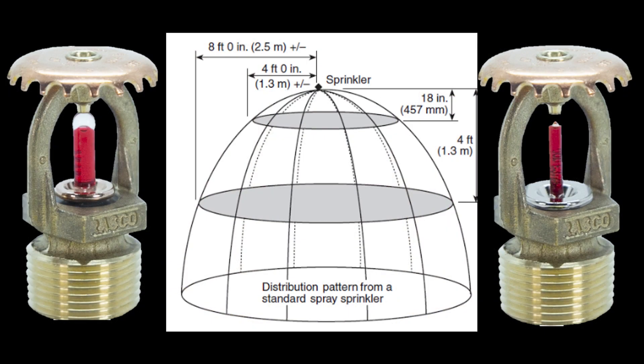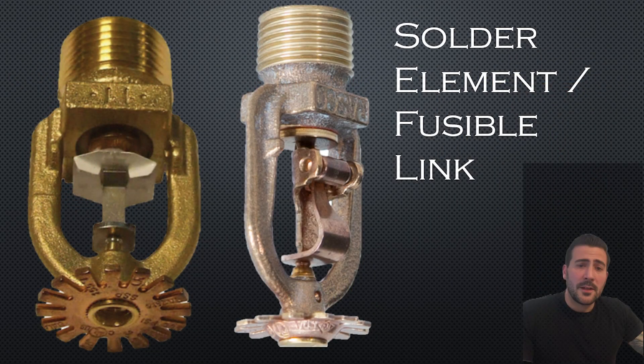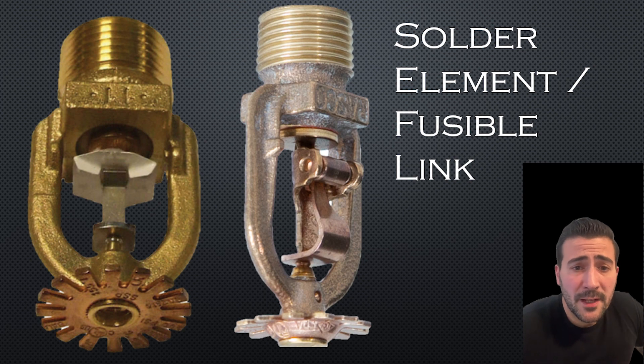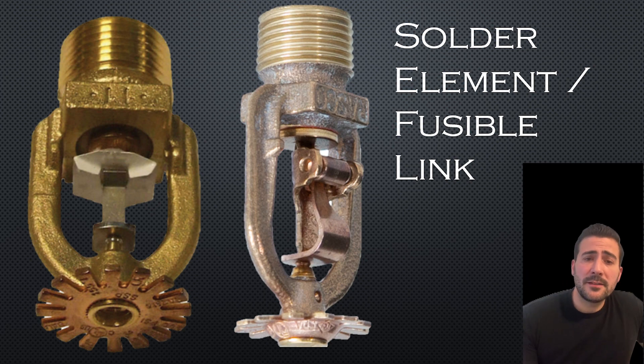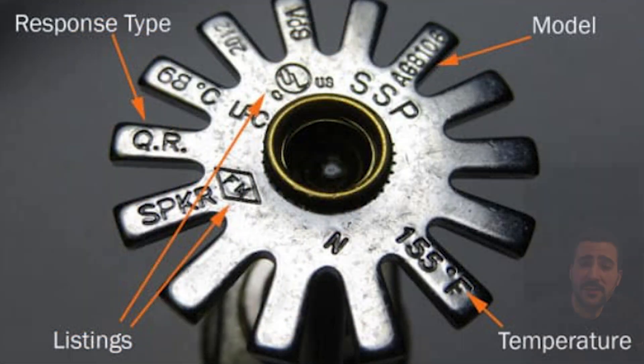The deflector and the spray pattern are exactly the same. If you have a fusible link style element, you can look at its deflector to see if it's stamped with QR for quick response or SR for standard response — and that's how you can tell the difference.